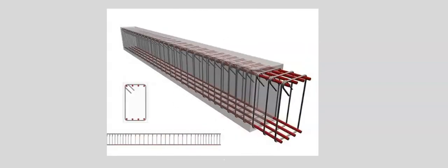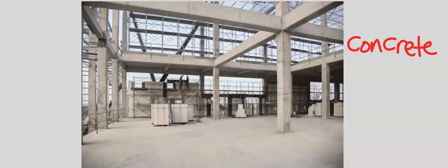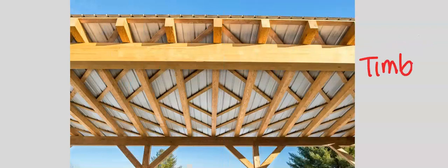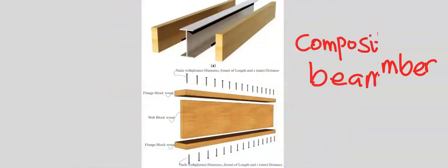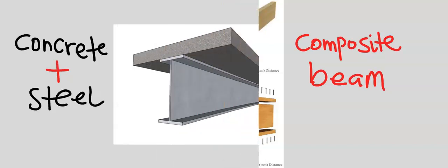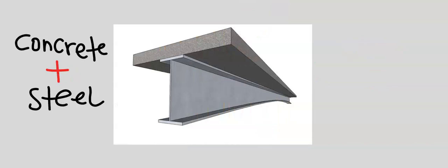A beam can be made of concrete, steel, or timber, or you can have a composite beam — for example, putting steel and timber together, or having concrete and steel put together.